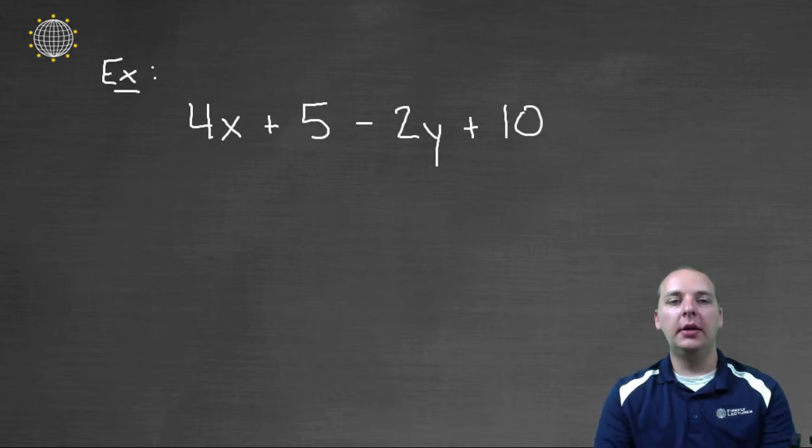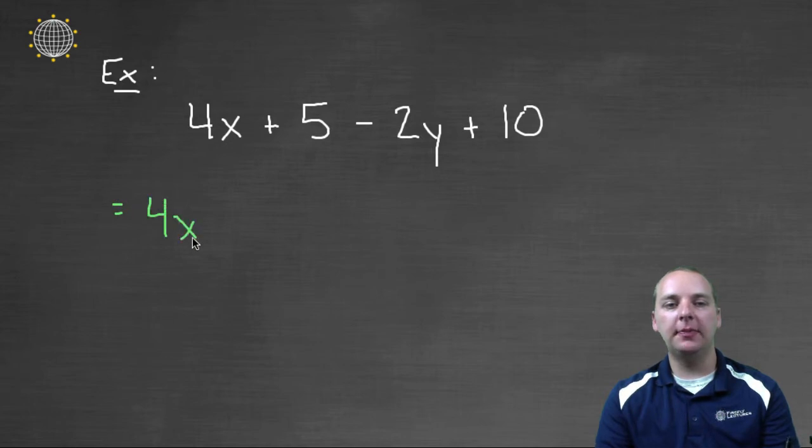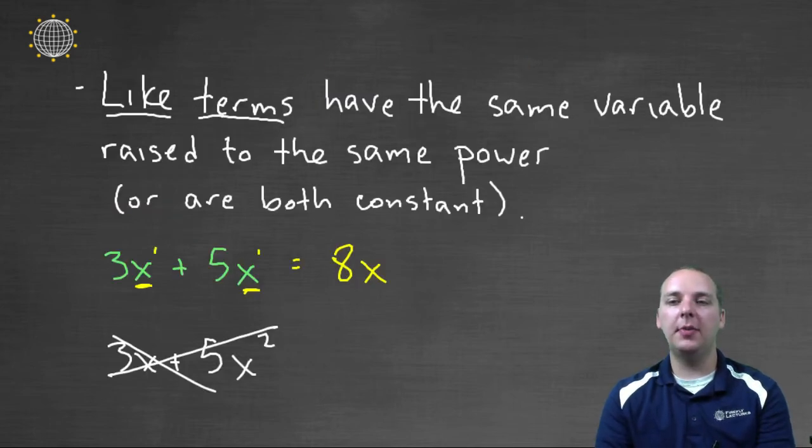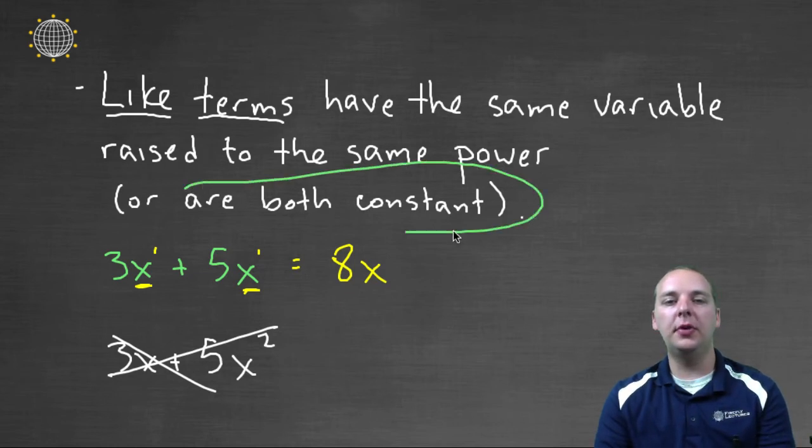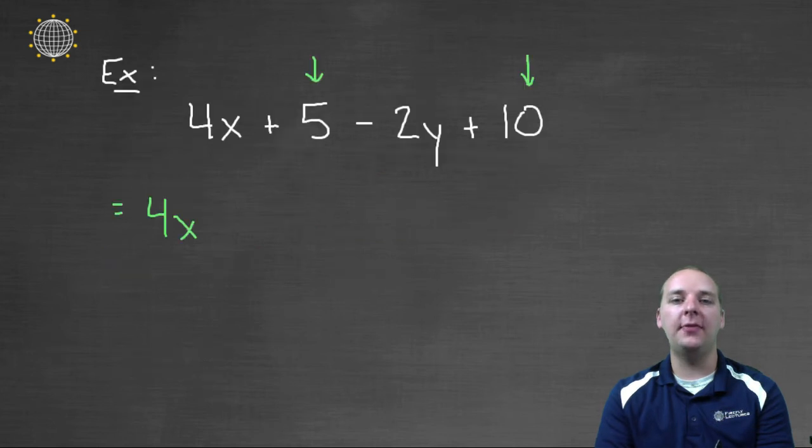Alright, now that means that my answer will be four x. Five is not a like term, minus two y is not a like term because it has a y. But now the plus ten on the other hand, the plus ten is a constant, and the five is a constant. And if you look back at my definition for like terms, you could have both terms being constant and they'd be considered like terms. You can add five and ten.